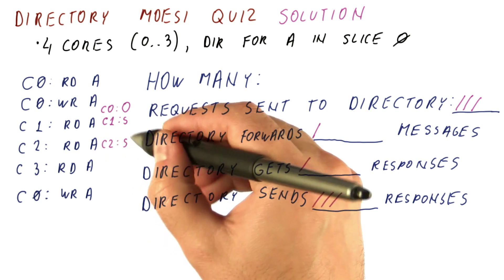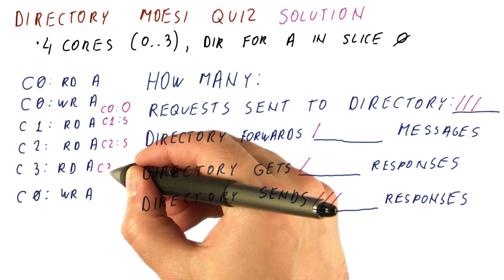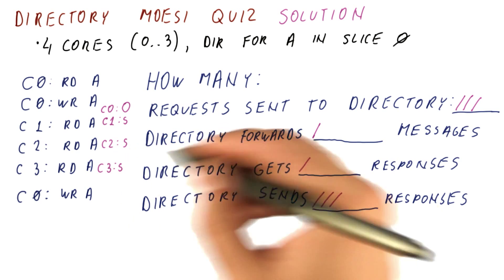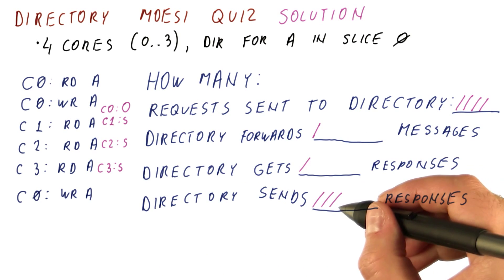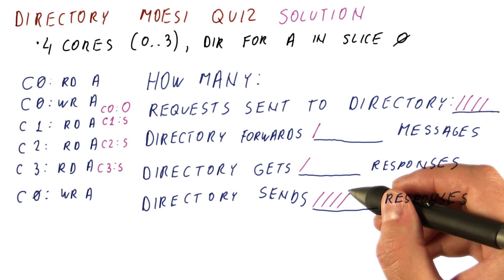So now C2 also has the block in the shared state. The same thing happens for C3's request. There is a request, the directory doesn't forward anything, just sends a response because it has to read the data from memory.